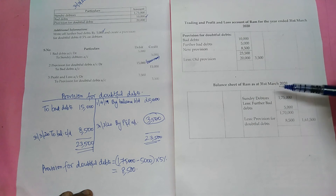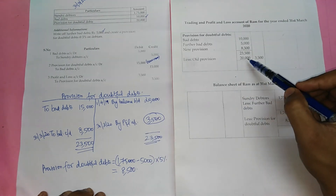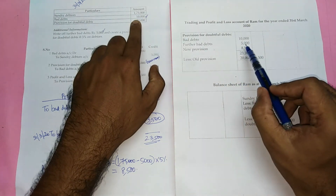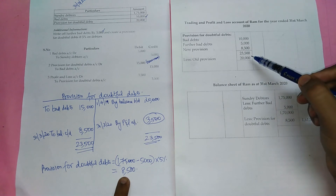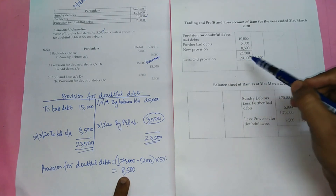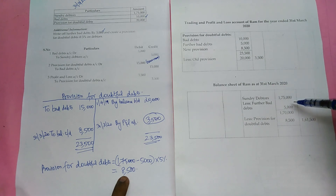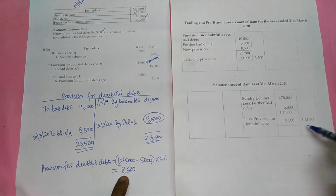Now let us see the impact in the profit and loss account and balance sheet. In the P&L, bad debts of Rs.10,000 plus further bad debts of Rs.5,000, plus new provision of Rs.8,500 totals Rs.23,500, less the old provision of Rs.20,000, giving Rs.3,500 debited to P&L. In the balance sheet, the original debtors of Rs.1,75,000 less further bad debts of Rs.5,000 equals Rs.1,70,000, less provision for doubtful debts of Rs.8,500 (5% of Rs.1,70,000), giving net debtors of Rs.1,61,500.